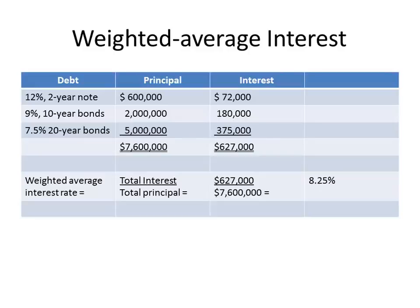You always start by looking at the specific loan taken out for that project and use that rate. If you have debt over and above the amount of that specific loan, you then take the average rate on the rest of your debt. That becomes your weighted average rate to apply on the asset not yet placed in service.